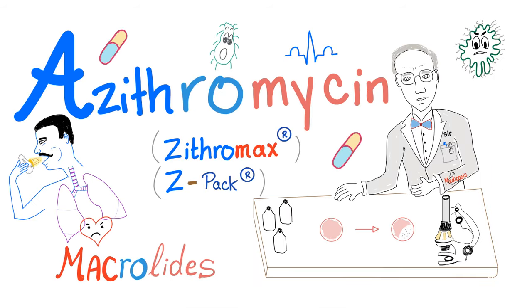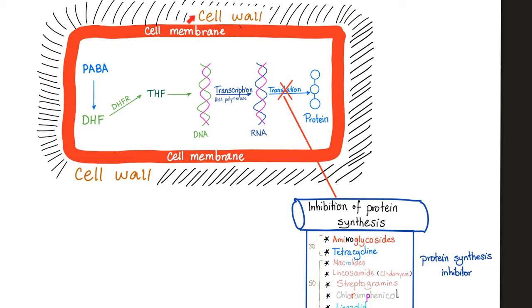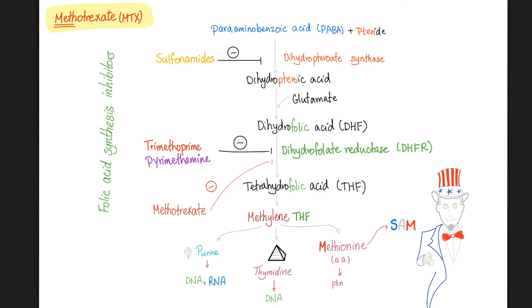In bacteria, we start with PABA — para-aminobenzoic acid — then dihydrofolate. By an enzyme called dihydrofolate reductase we get tetrahydrofolate or THF, and then THF helps us make purines and pyrimidines in the DNA. In bacteria, fungi, and plants the pathway goes: PABA → dihydropteroic acid → dihydrofolate (DHF) → THF. Transcription equals RNA; translation equals proteins.